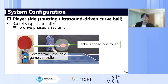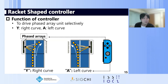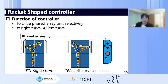On the player side — meaning the person who shoots the ultrasound-driven curveball — the player has a racket-shaped controller used to drive the phased array units. The controller selectively drives the phase arrays: pressing the Y button drives the left phased array and curves the ball to the right; pressing the A button drives the right phased array and curves the ball to the left.